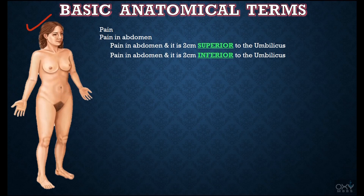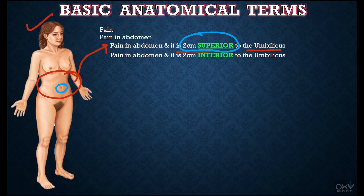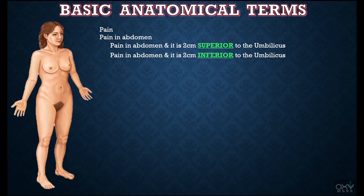But if this lady says 'I have pain in the abdominal region and it is two centimeters superior to the umbilicus or navel' — this is our umbilicus or navel, and she is telling that two centimeters superior, or above, the umbilicus means we have to go in this direction. It is two centimeters superior, which means she is telling about this exact point. So this is the exact location of the pain present in the abdominal region.